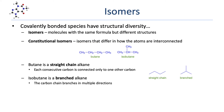Organic molecules deal mostly with covalent bonds, and covalently bonded species have a lot of structural diversity. Isomers are molecules that have the same formula but different structures. Constitutional isomers are isomers that differ in exactly how the atoms are interconnected. For example, butane and isobutane both have the formula C4H10, but the atoms in each are connected differently.